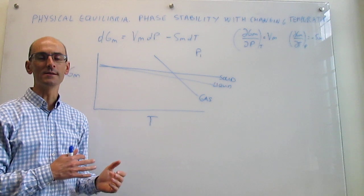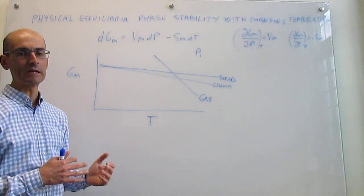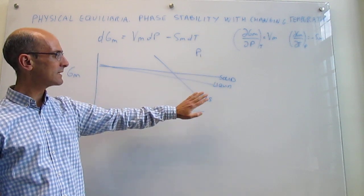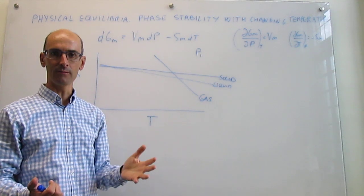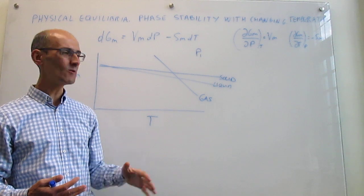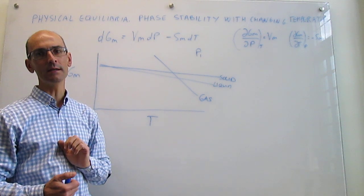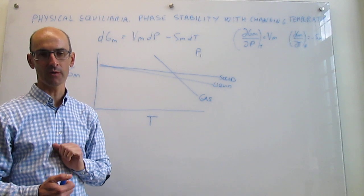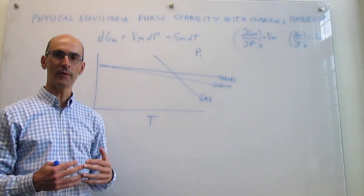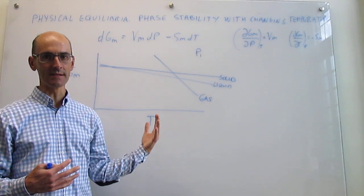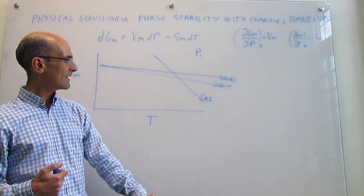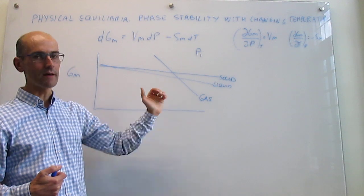What I have here is the variation of the molar Gibbs energy with temperature at constant pressure, which we are going to call P1. I have decided to draw the lines all in the same blue trace, because I am going to use a different trace to see what would happen to these lines if we decided to change the pressure — that is going to be on a red trace. The slopes are the minus molar entropies, so the slope of the gas is going to be more negative than that of the liquid, than that of the solid.